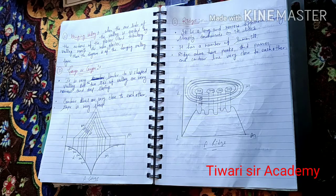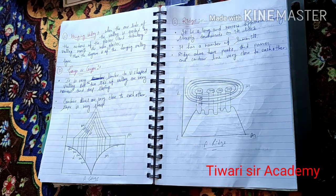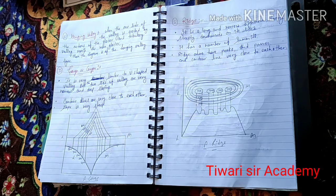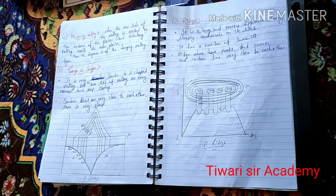Good morning class. In this session we will talk about gorge and ridge in detail. We have previously seen V-strip valley, U-shaped valley, and hanging valley. Now it's time to talk about gorge or canyon and ridge. Gorge is also called canyon.